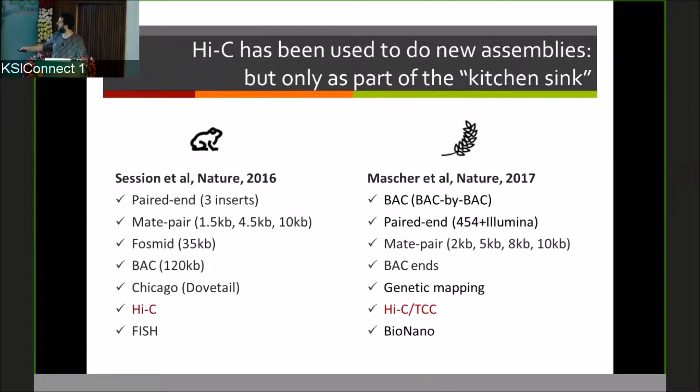At the very end of 2016, beginning of 2017, there were actually two papers that appeared that started to use this kind of 3D proximity data in practice to assemble genomes. A paper in Nature, and then a paper on Xenopus, and another Nature paper on the barley genome. But what I want to highlight is that they were using 3D information, but they were using many other kinds of information as well. So using paired end data, mate pair data, fosmids, BACs, FISH experiments, optical mapping, linkage mapping, all kinds of data sets.